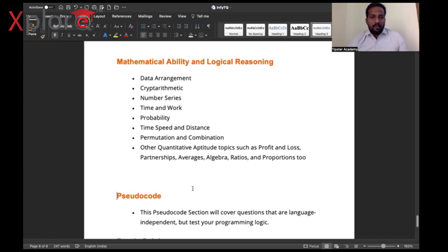Permutations and combinations—what are the possibility ways of arranging articles in certain places. These are the brief topics. If I want to take you through all the other quantity topics: profit and loss, partnership, averages, algebra, ratios, proportions. This will be having some minor weightage in your exam. I'll take you through for sure.